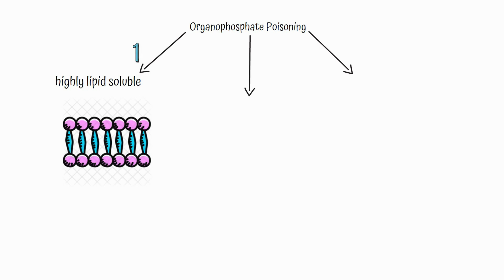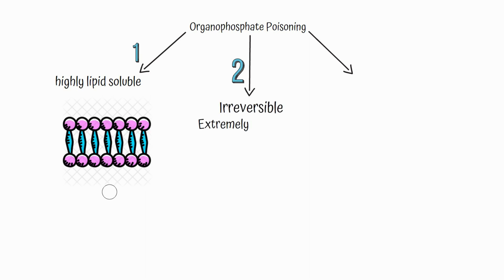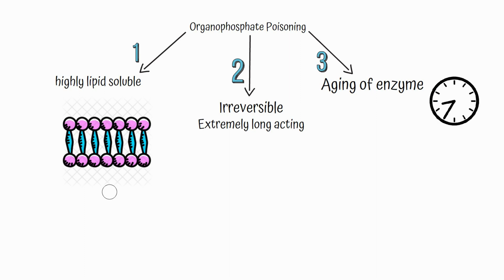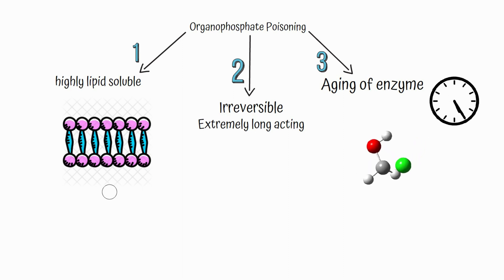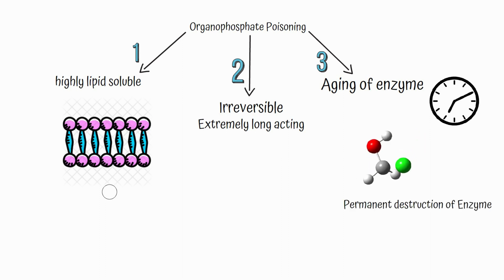Three factors are important. First, organophosphates are highly lipid soluble and can be absorbed through the skin. Second, they are irreversible in their action and extremely long acting. Third, they cause aging of the enzyme — over time, chemical changes occur in the covalent bonds formed between organophosphates and the cholinesterase enzyme, resulting in permanent destruction of the enzyme.